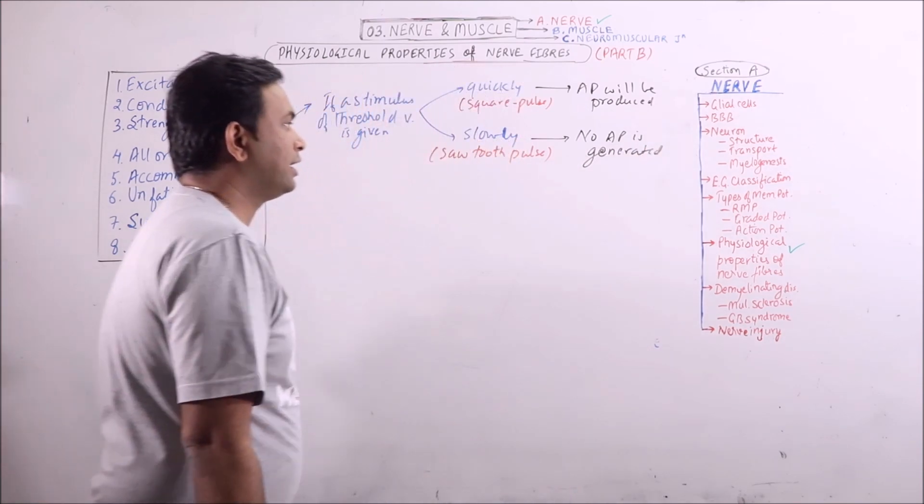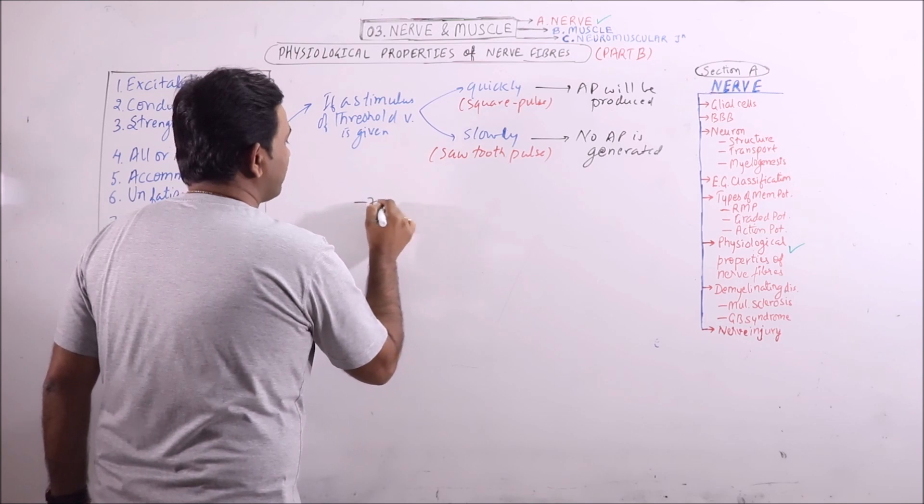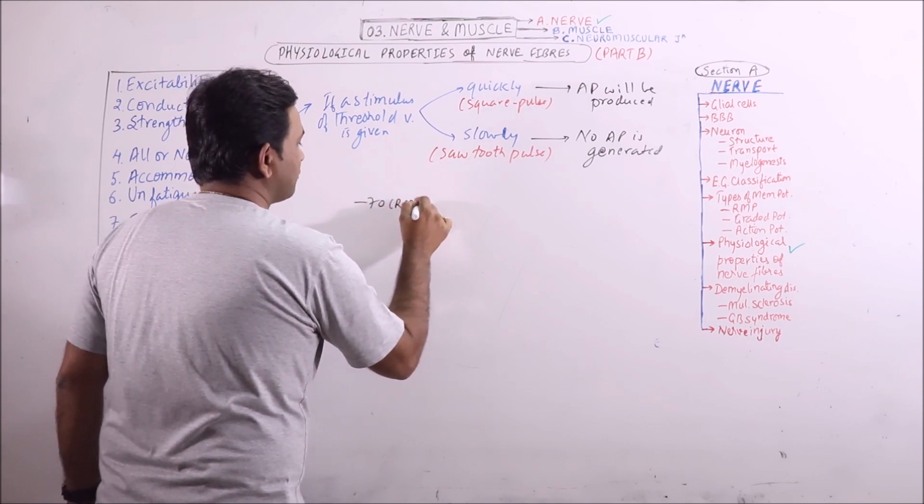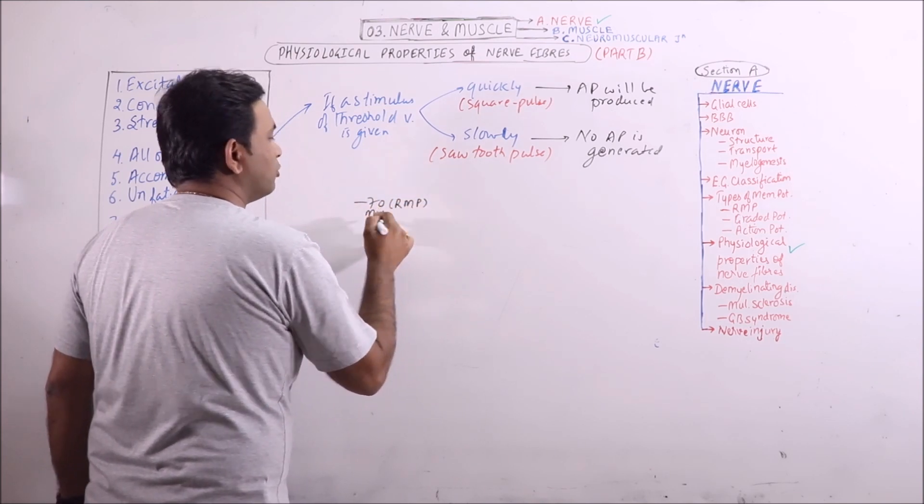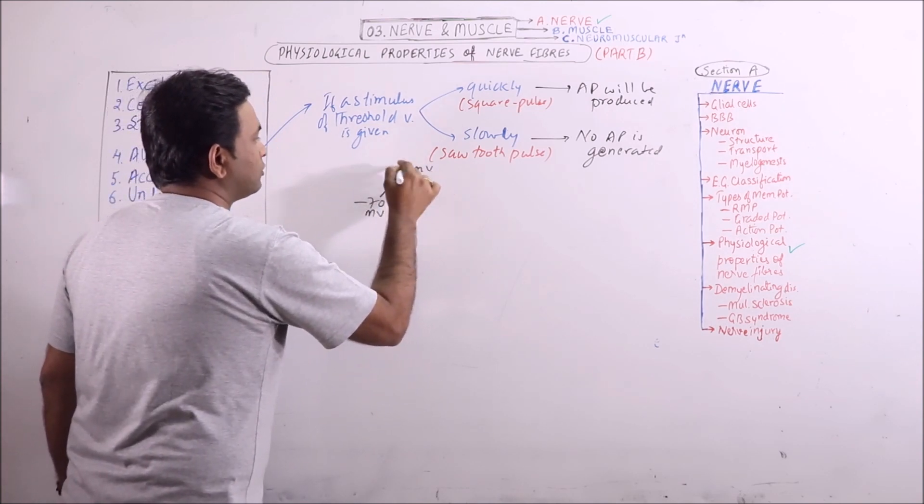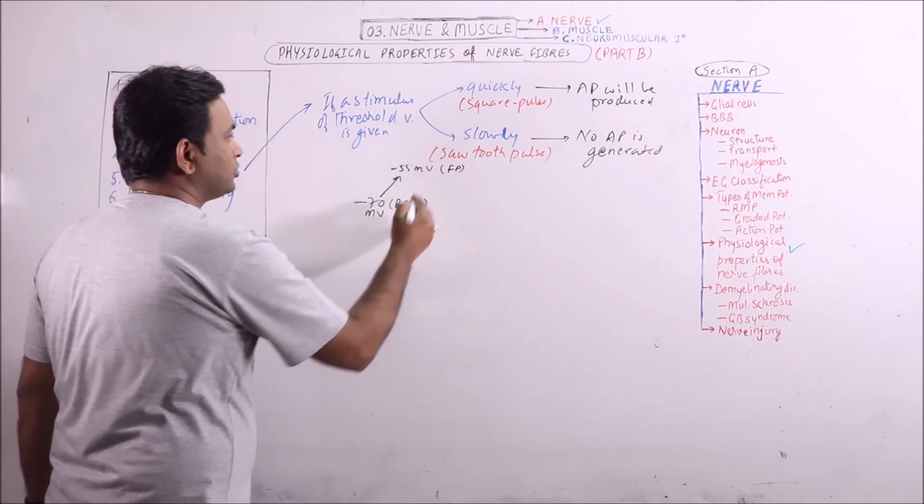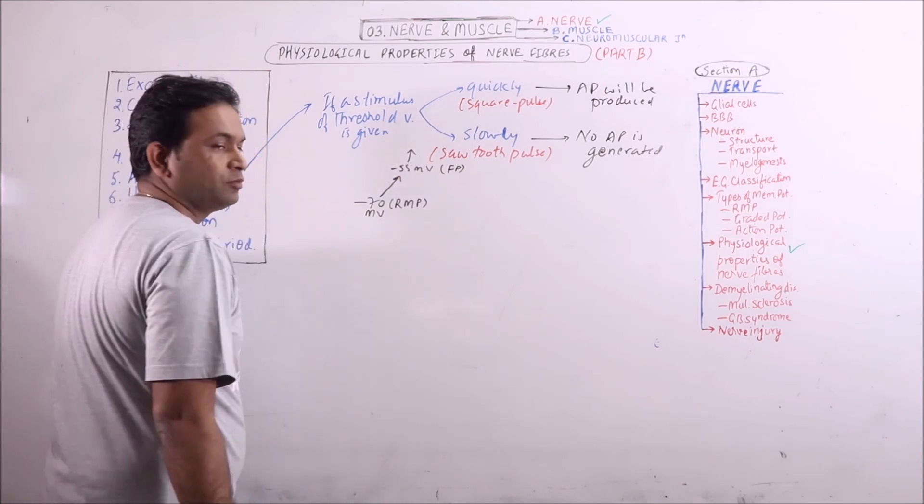The reason behind that is that we know that from minus 70 millivolts RMP, minus 55 millivolts that is firing potential has to be reached by the graded potential so that action potential should be generated.